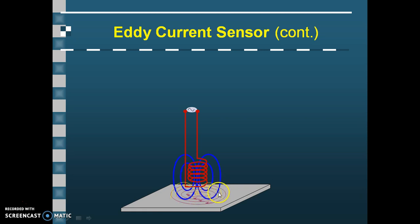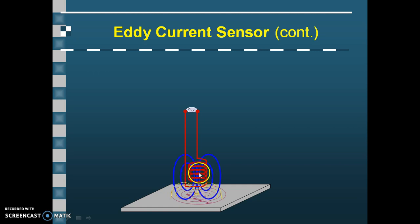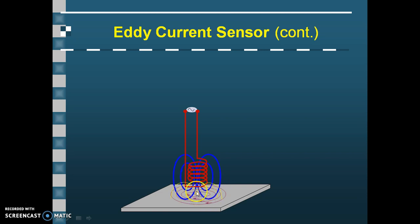From Lenz's law, this magnetic field produced by the eddy current will oppose the electromagnetic field produced by the coil. That means this secondary field will oppose the probe's field. And the closer the probe is to the target — the target being the metallic sheet — the more the eddy current interacts with the probe's field. If the distance is large, the interaction between the two fields will be smaller, and if the distance is small, the interaction will be greater.